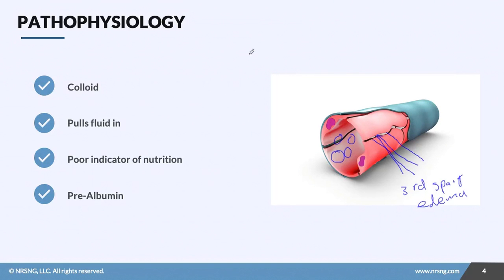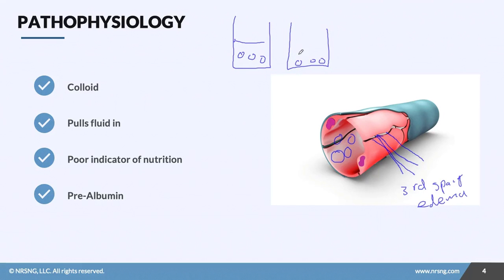If you remember from anatomy, osmotic pressure is where you have your solute and solvent, and osmotic pressure tries to balance the concentrations on either side. That's kind of what's happening with oncotic pressure — it's the pressure that these proteins inside the vessels exert, pulling fluids inside to try to balance things out.